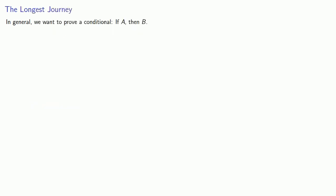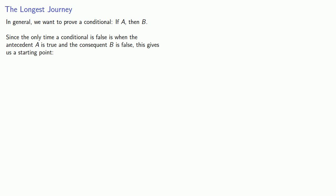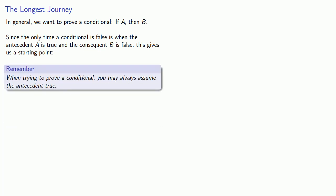To answer this question, let's consider: in general we want to prove a conditional — if A, then B. Since the only time a conditional is false is when the antecedent A is true and the consequent B is false, this gives us a starting point: when trying to prove a conditional, you may always assume the antecedent true.